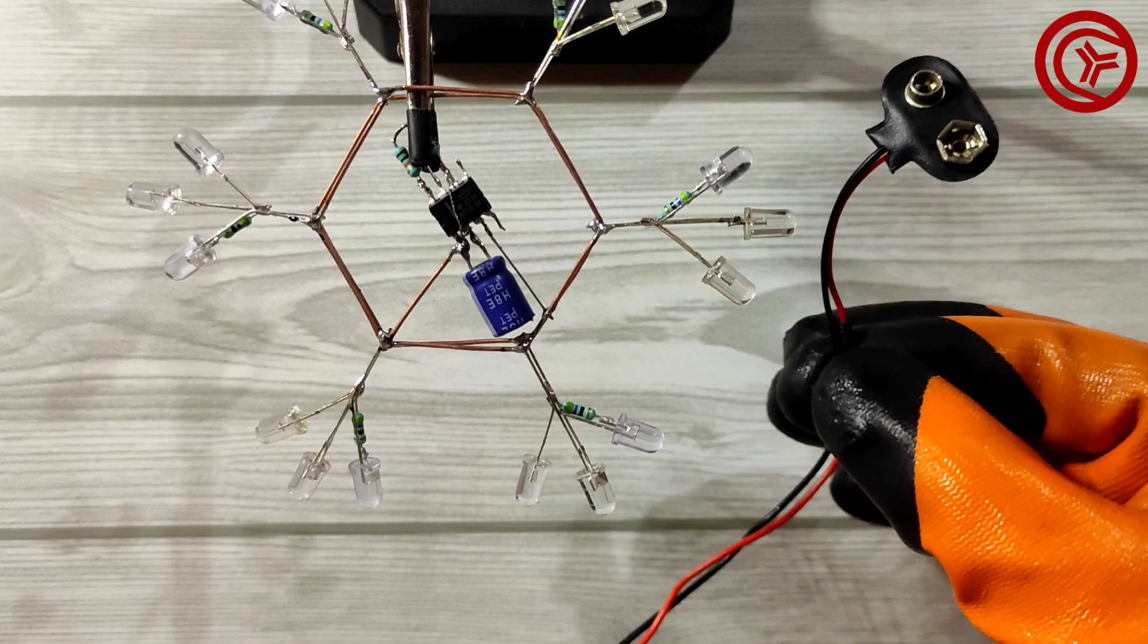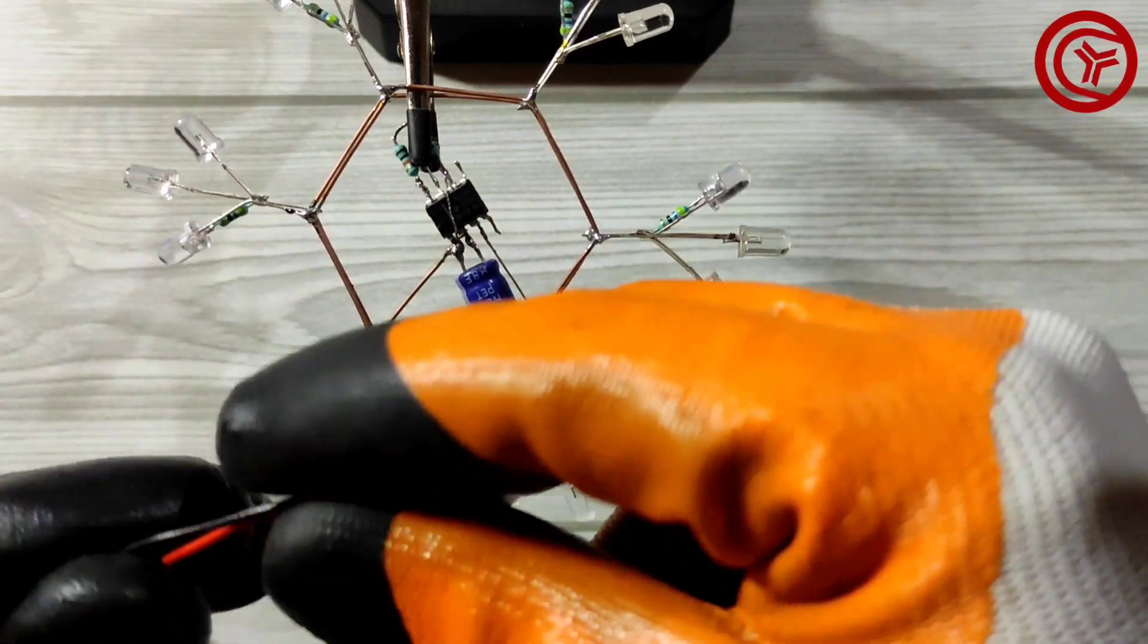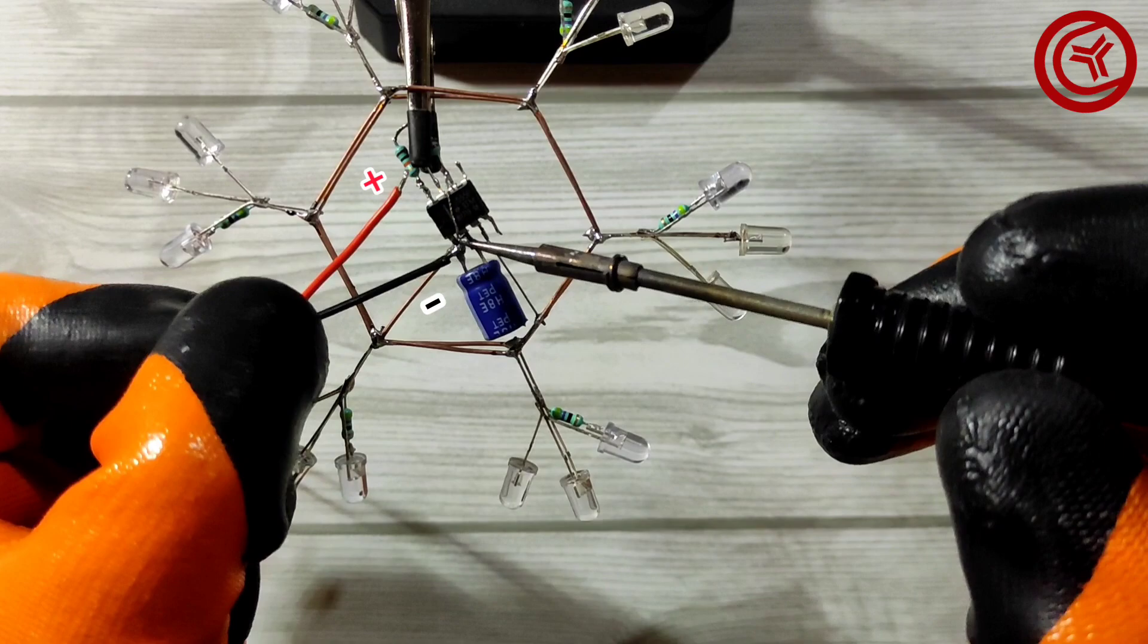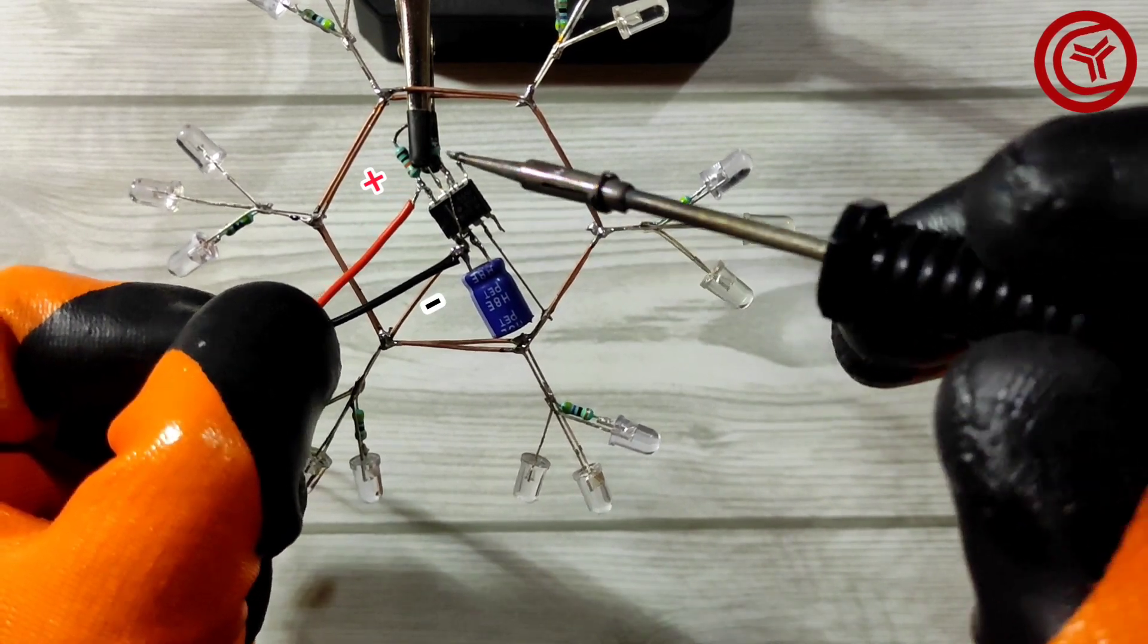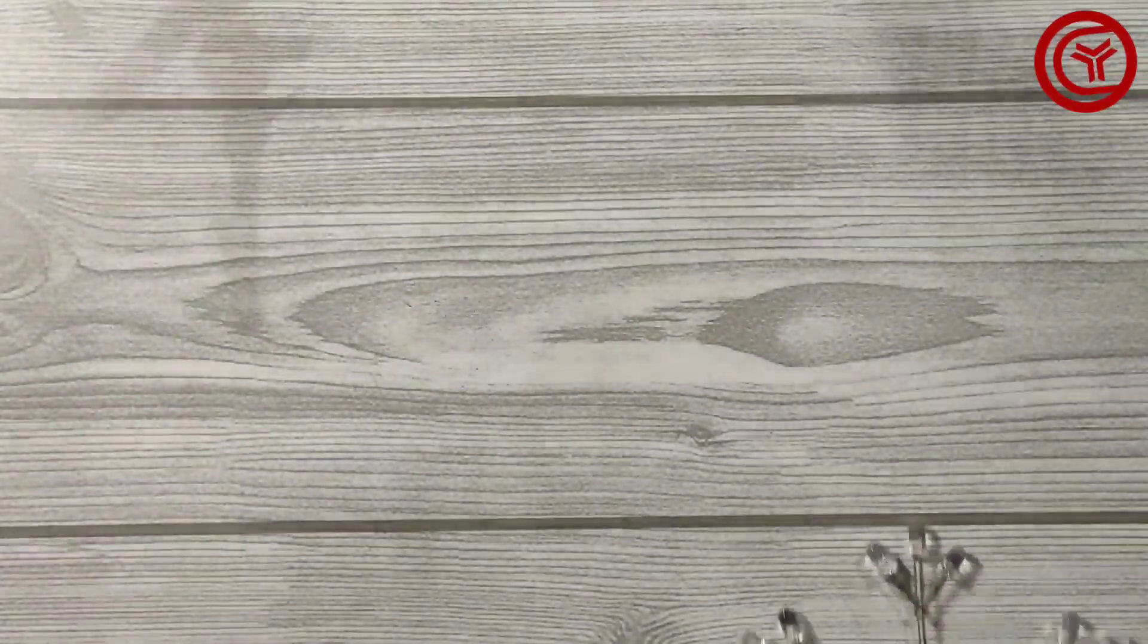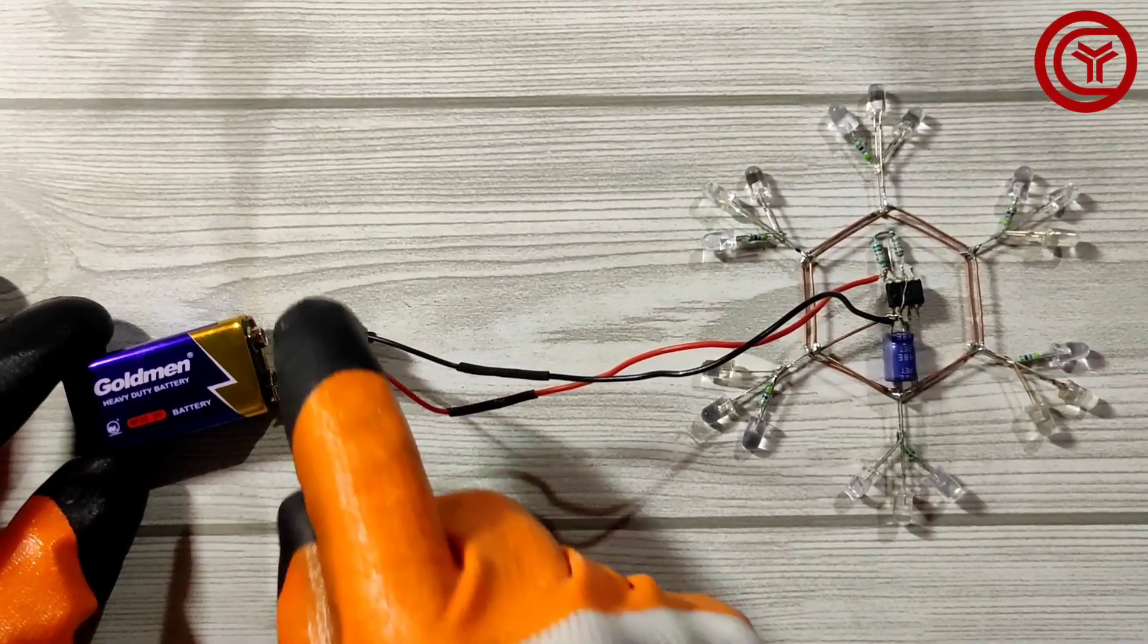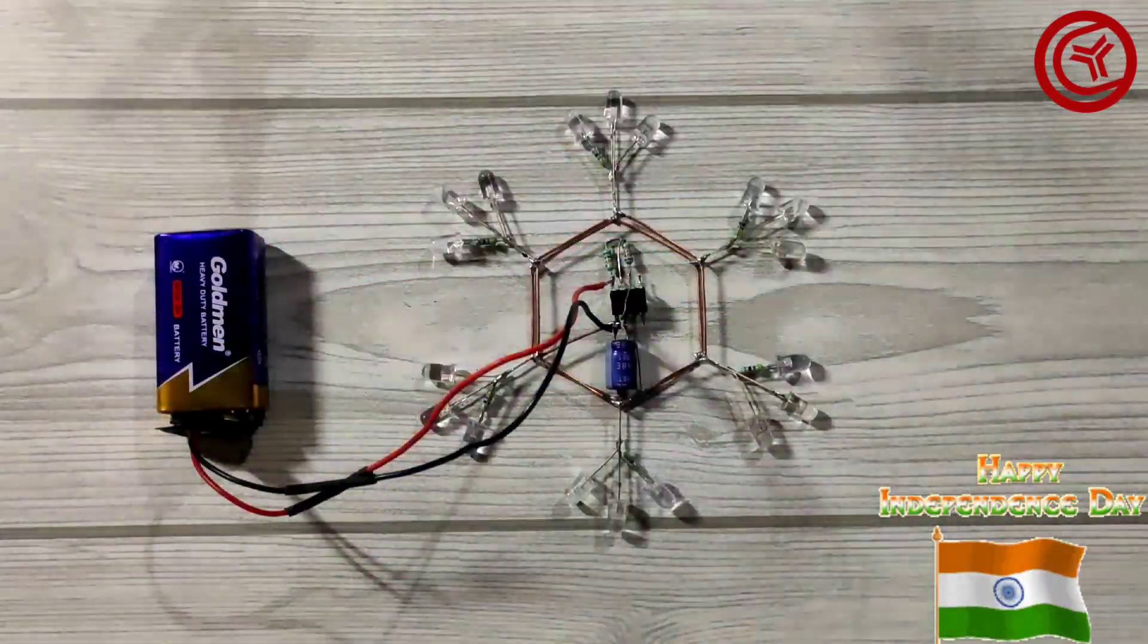Now we require this 9V battery connector. Solder negative with IC pin 1 and positive with IC pin 8. Now our circuit is complete, use 9V battery and connect battery with connector. And here is our awesome Indian flag effect circuit on. Happy Independence Day.